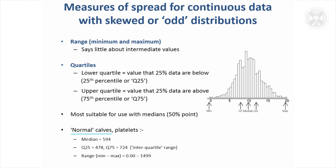The other possibility is to give the range — you could give that too, so that was 0 up to 499. So that's an alternative way of summarising continuous data, and it's probably the most useful one to use if you really think you've got a very skewed or odd distribution.